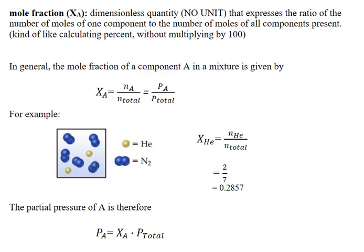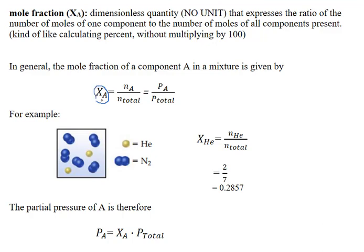One application of Dalton's law is to determine the individual partial pressures of gases given a mixture and its total pressure. We're going to be using a quantity called the mole fraction, which is dimensionless so it has no unit, and it gives us the ratio of the number of moles of one component to the total number of moles. We can think of it like a percentage without multiplying by 100. We use the symbol X_A to represent the mole fraction of gas A, determined by taking the moles of gas A and dividing by the total number of moles of gas in the sample.